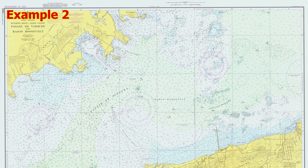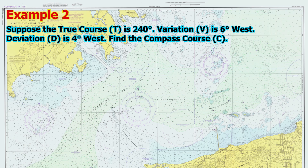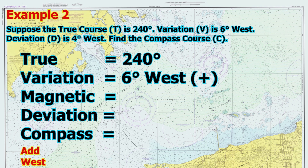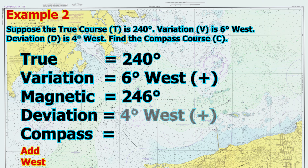Example 2: Suppose the true course is 240 degrees, the variation is 6 degrees west, and the deviation is 4 degrees west. We need to find the compass course. Step 1 — Apply variation: True 240 degrees plus 6 degrees west equals Magnetic 246 degrees. Step 2 — Apply deviation: Magnetic 246 degrees plus 4 degrees west equals Compass 250 degrees.